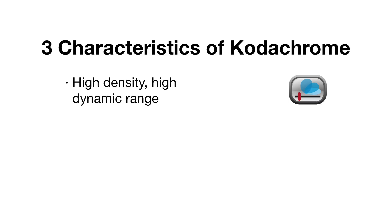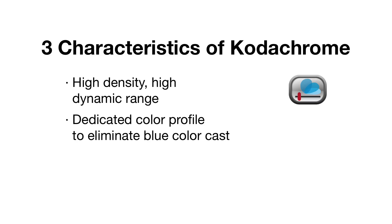A characteristic of Kodachrome film is its bluish color cast. When in Kodachrome mode, Silverfast uses, in addition to regular color management, a special color profile to remove this color cast.